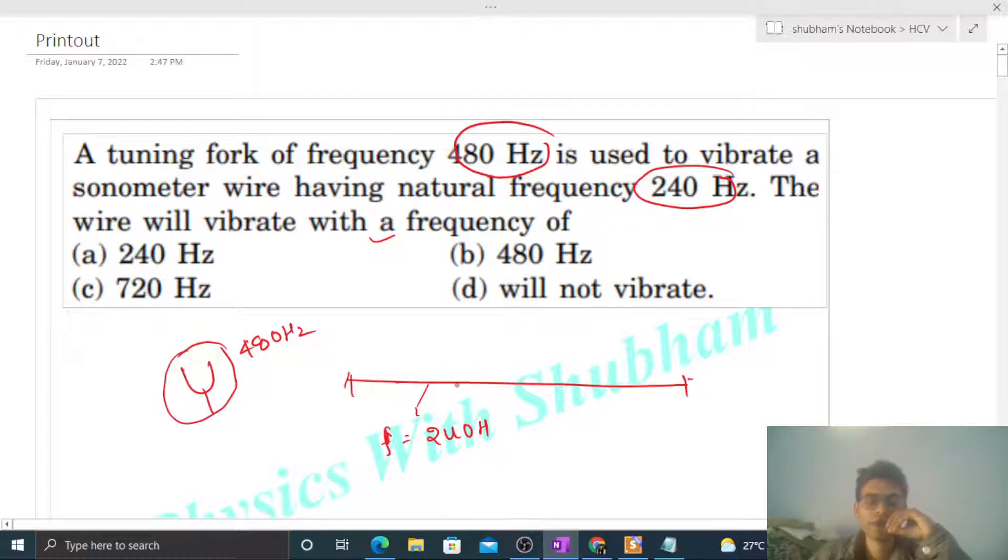The waves generated will have a frequency of 480 Hz. Now when we talk about the tuning fork's frequency, what does that mean? The tuning fork has prongs - these are like hands that we call prongs.